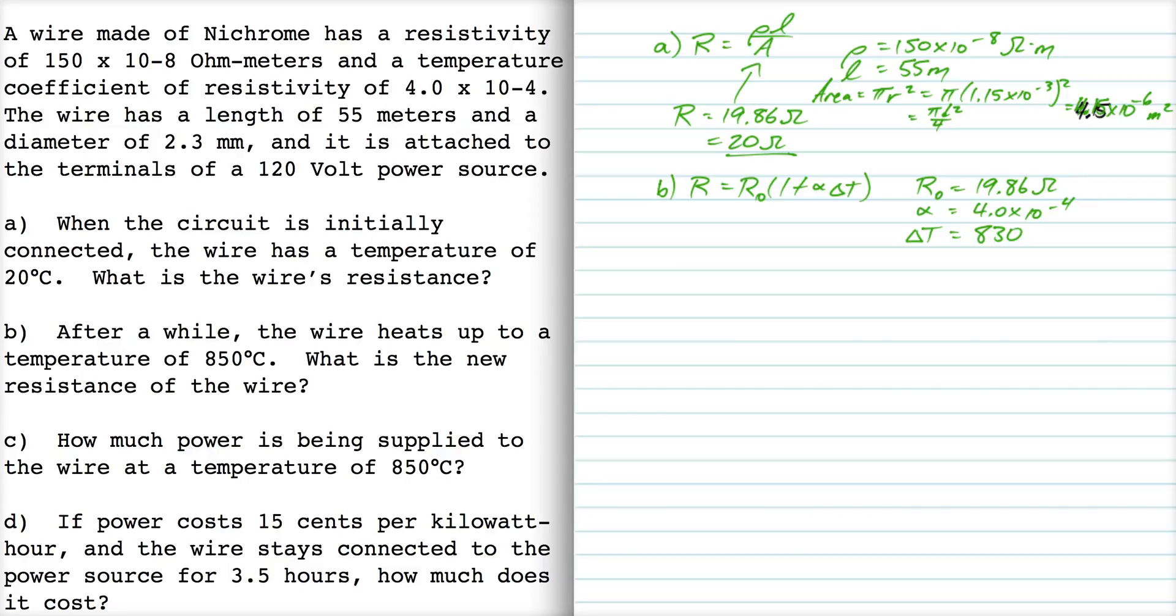So if I plug all those quantities in and calculate r, my new r, I get 26.45 ohms, or rounding that to 26 ohms.